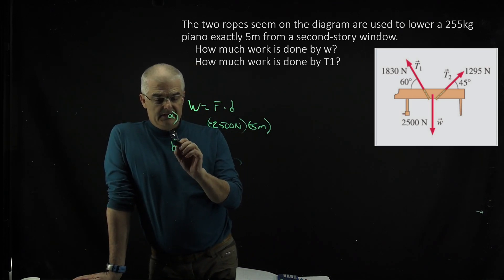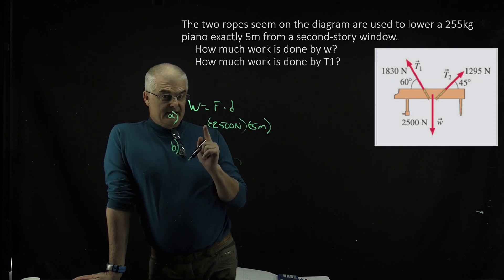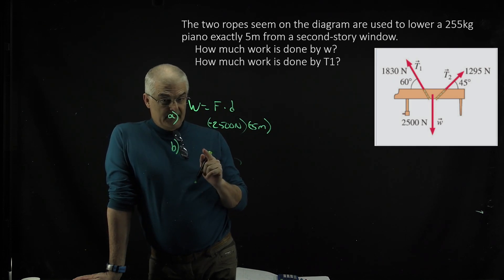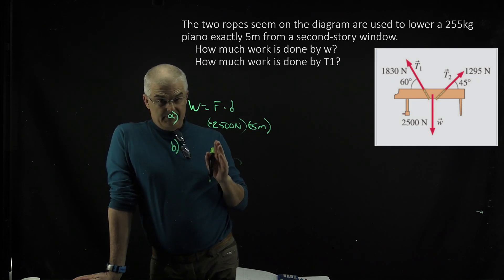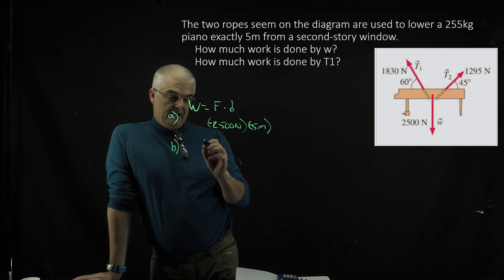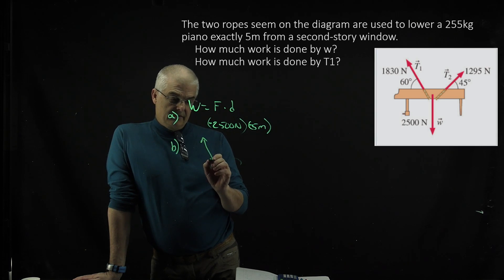For letter B, when you do this, now letter B is a little trickier because you're trying to find the work done by T1. So T1, you've got an angle where this is 60 degrees.